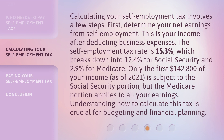Calculating your self-employment tax involves a few steps. First, determine your net earnings from self-employment — this is your income after deducting business expenses. The self-employment tax rate is 15.3%, which breaks down into 12.4% for Social Security and 2.9% for Medicare. Only the first $142,800 of your income, as of 2021, is subject to the Social Security portion, but the Medicare portion applies to all your earnings. Understanding how to calculate this tax is crucial for budgeting and financial planning.